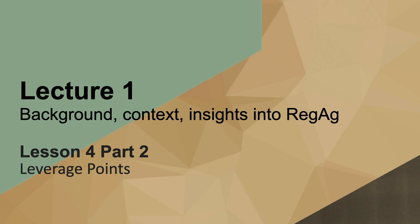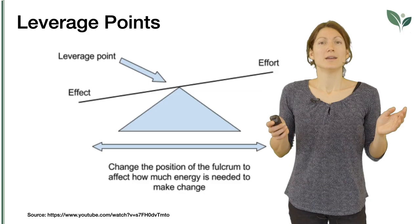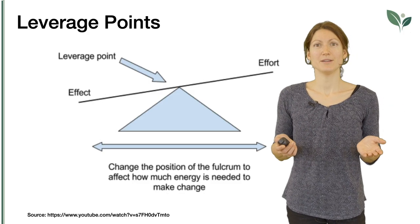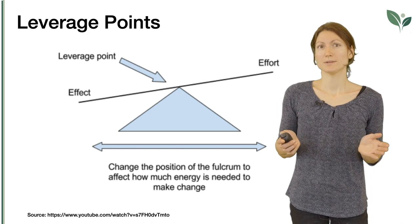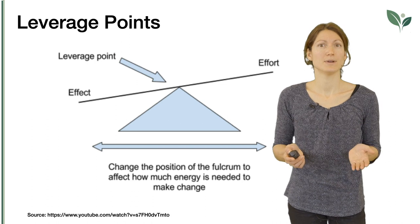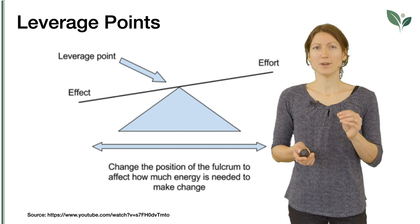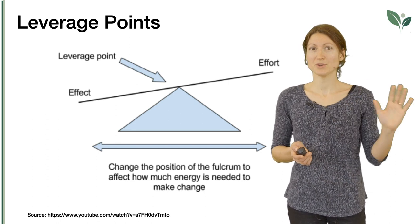Let's summarize. In the first part, we have seen that transitioning to a new agricultural system comes with a lot of barriers on different levels. Eight key issues and barriers have been identified. In the first section, we had an insight on key barriers for scaling regenerative agriculture, helping to identify leverage points — places within a complex system where a small shift in one area can produce a big change.